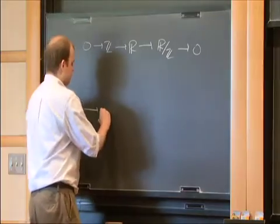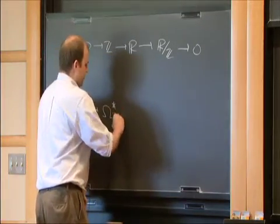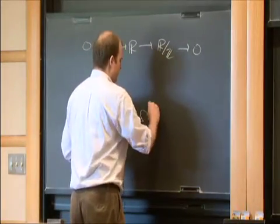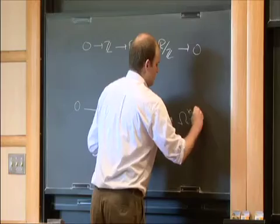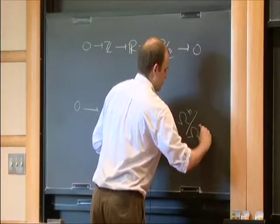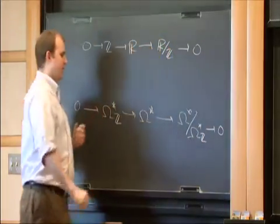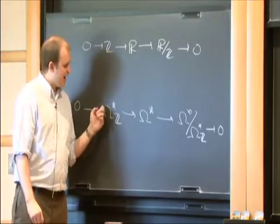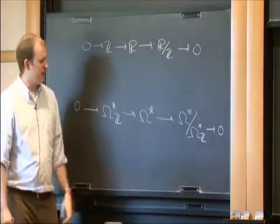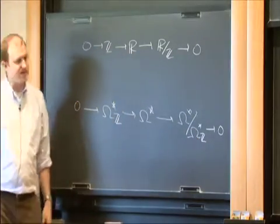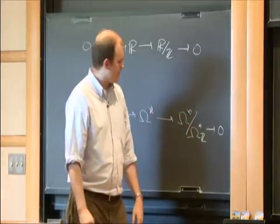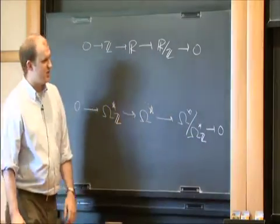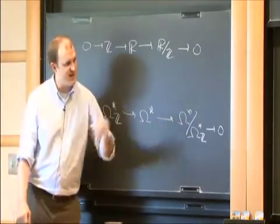I can take those closed forms with integral periods, include them into all forms, and then take the quotient. Because all exact forms are included in here, that means I can give this and this zero differential, and I still have a short exact sequence of chain complexes. That gives me a long exact sequence in their homologies. The homology of this is regular de Rham cohomology, and these have no differential, so they stay the same under taking homology.